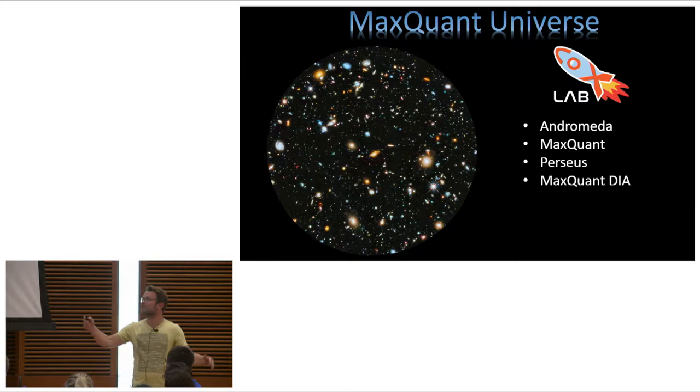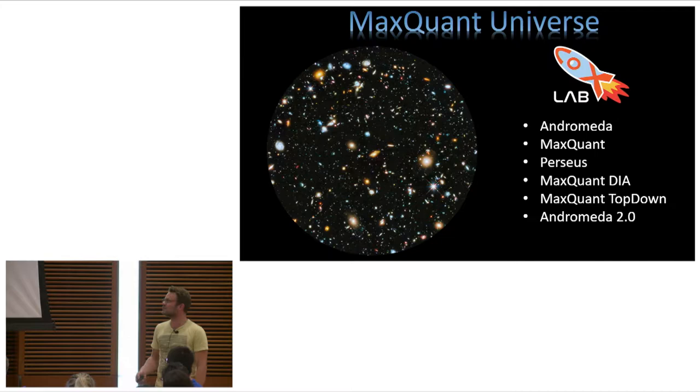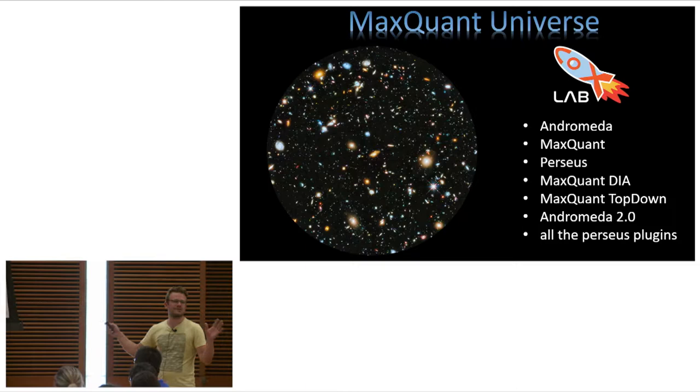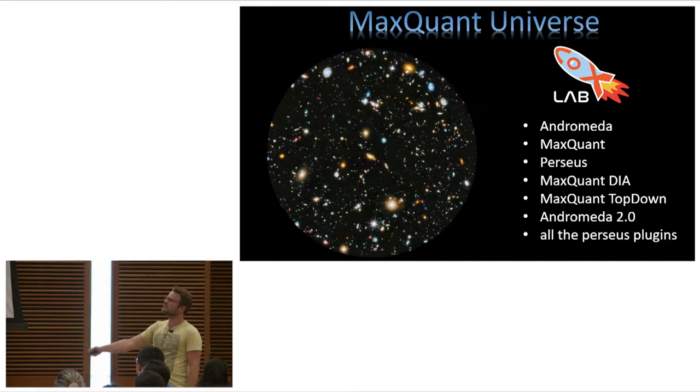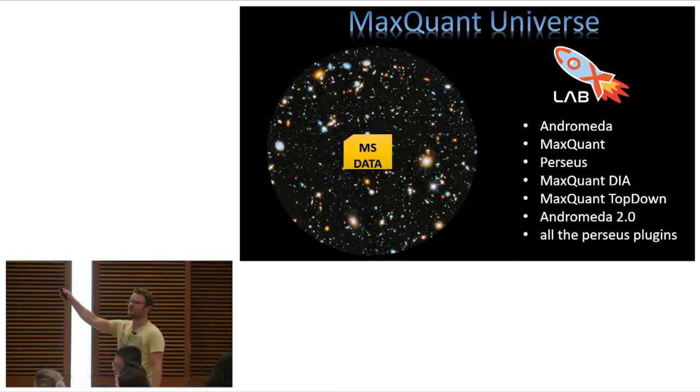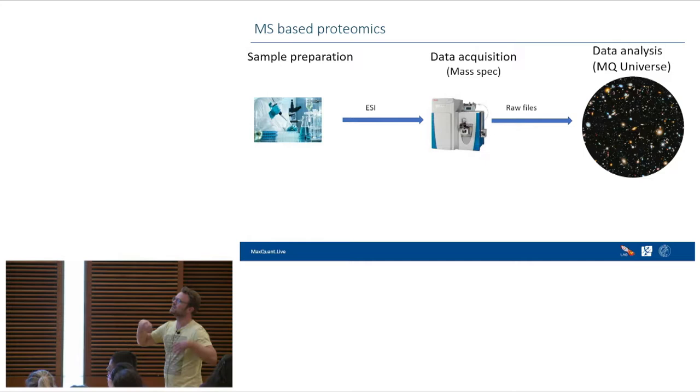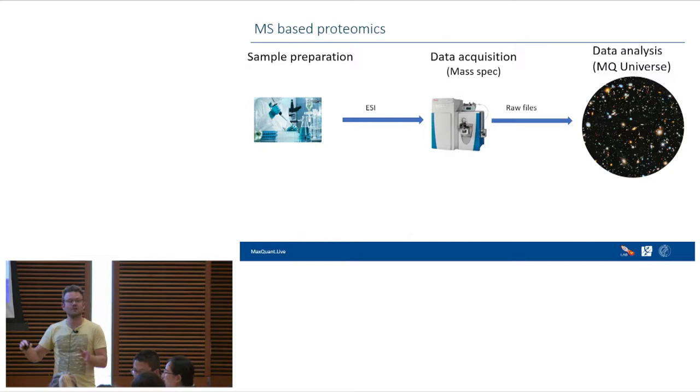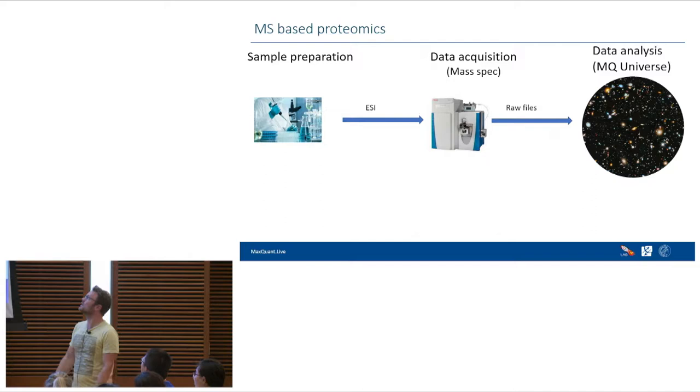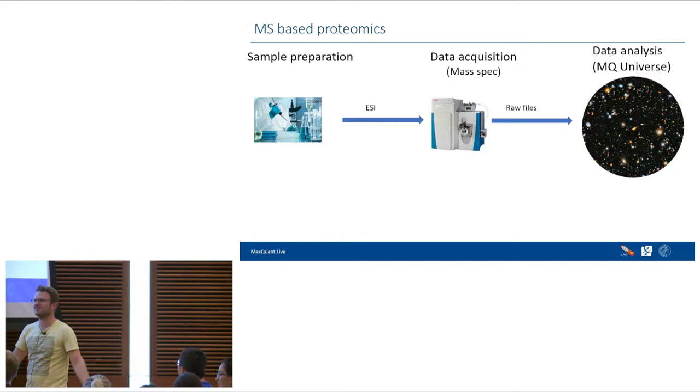There's another galaxy, Perseus. There's now new stars, newborn stars like MaxQuant DIA, MaxQuant top-down. There is Andromeda 2.0 and there is all the Perseus plugins and many more tools. And this universe is circulating around a thing which is called MS data. And these MS data, they come out of a mass spec. So first you have the sample preparation in your lab, then your peptides are electrosprayed into the mass spectrometer and the output are the raw files. And then these data go to the universe and are analyzed by all these fancy tools.